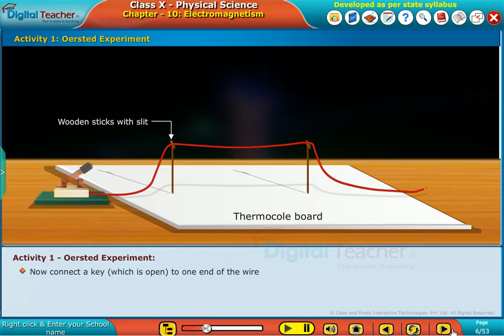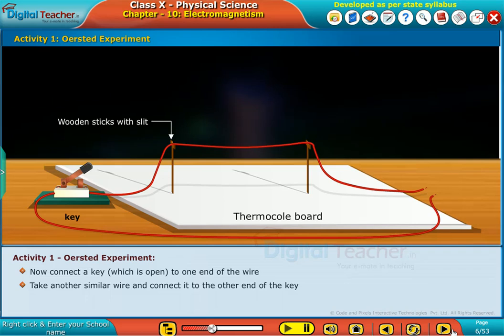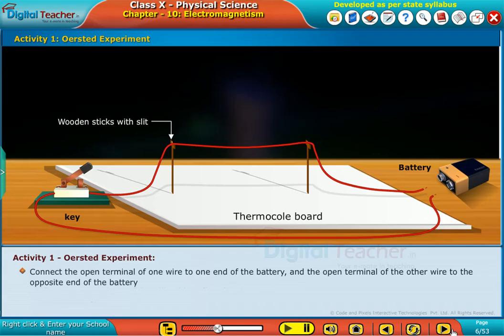Now connect the key, which is open, to one end of the wire. Take another similar wire and connect it to the other end of the key. Take a battery of 9 volts. Connect the open terminal of one wire to one end of the battery, and the open terminal of the other wire to the opposite end of the battery.